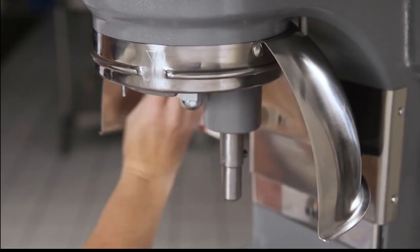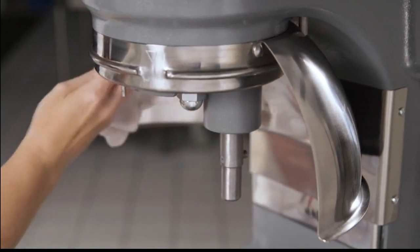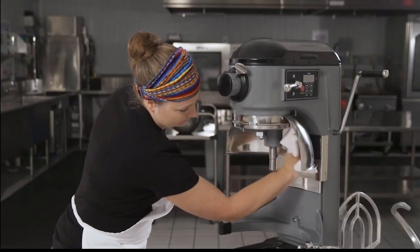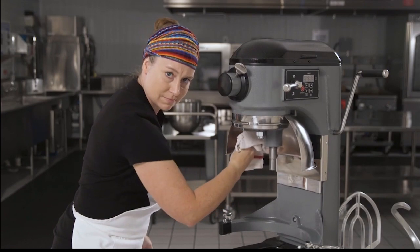The splash guard can be wiped or washed using warm soapy water. Make sure to rinse with clear water and air dry. We'll know if you didn't.